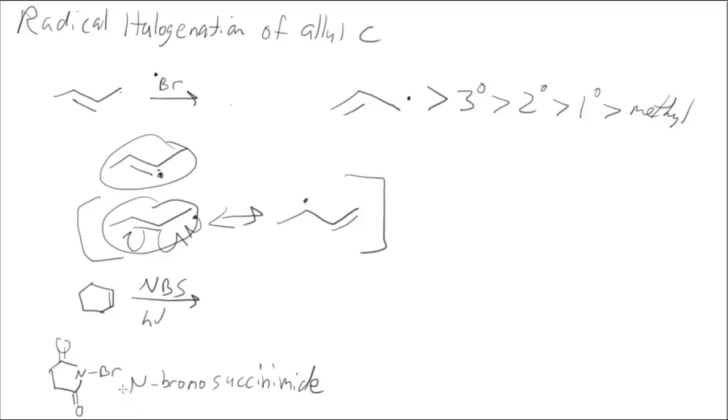So a lot of times what we'll use is N-bromosuccinimide, or we call it NBS, and this is a very weak nitrogen to bromine bond, which forms Br in situ, or during the reaction. Now we have our cyclohexene, which can react.